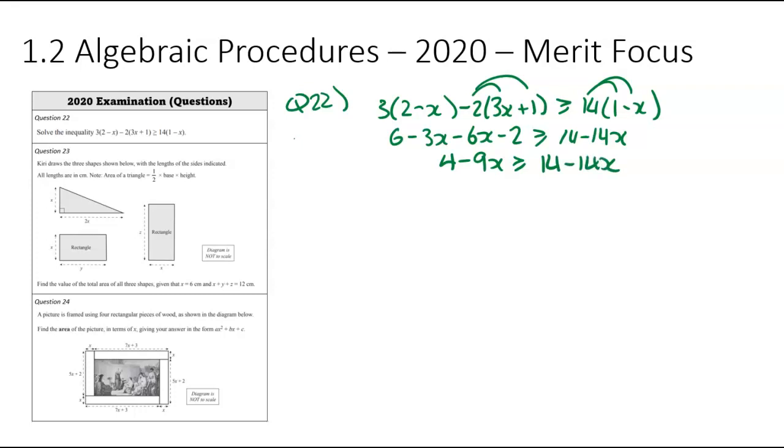So we're going to have 4 minus 9x, greater than or equal to 14 minus 14x. I'm now going to group all my x's together. So I'm going to focus on the smallest amount, which is the negative 14. I can get rid of that by going plus 14x plus 14x. So that will be 4 plus 5x, greater than or equal to 14. I'm now going to go minus 4 minus 4. 5x greater than or equal to 10. Divide by 5, x would be greater than or equal to 2.